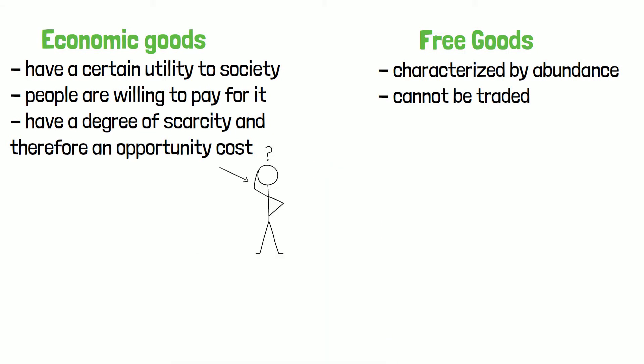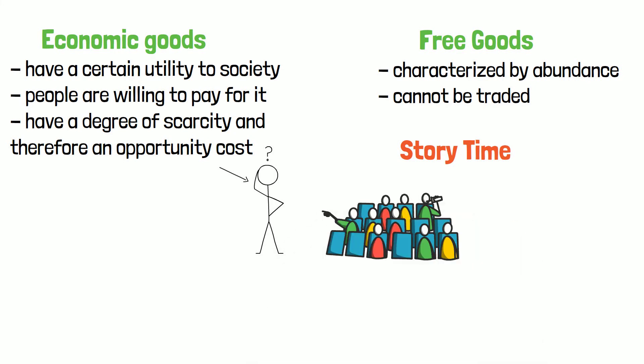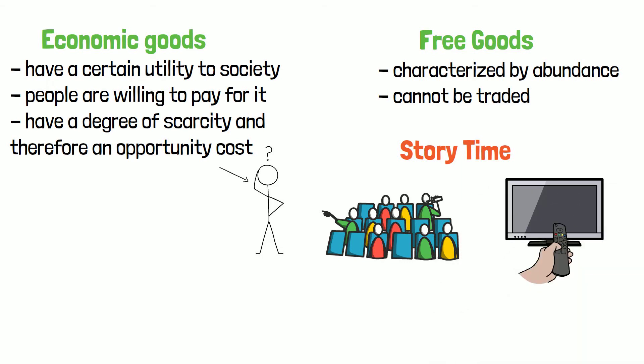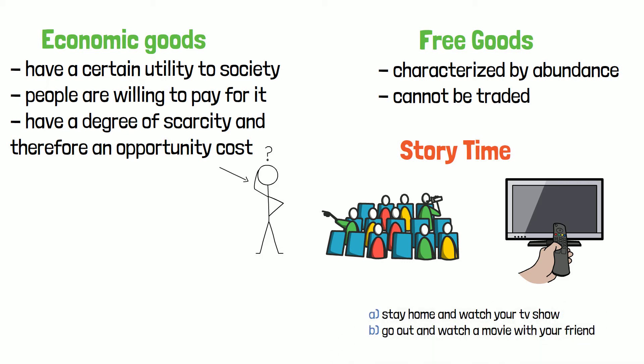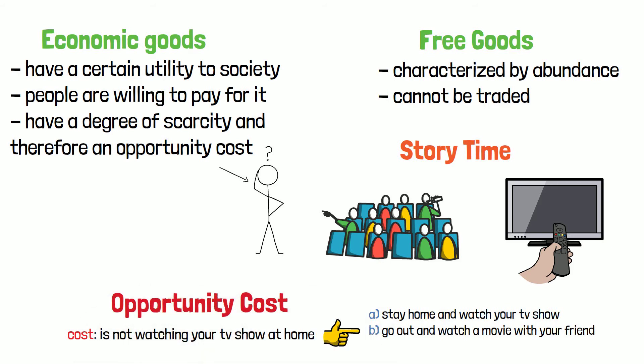What's that, you ask? Time for a little story. Let's say your friend invited you to a movie, but on that same night you were planning to stay home and watch an episode of your favorite TV show alone. You now have to make a choice: you either stay home and watch your TV show, or go out and watch a movie with your friend. They both sound pretty good, but both have a cost. Let's say you choose option B — you get to watch the movie with your friend, but the cost of it is not watching your TV show at home that night. That, dear friends, is an opportunity cost. If you choose option A, your opportunity cost would be not seeing the movie with your friend.